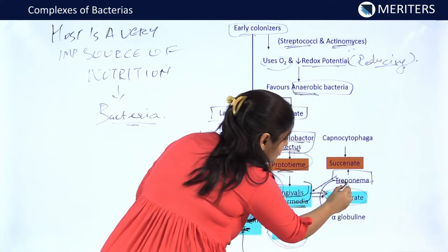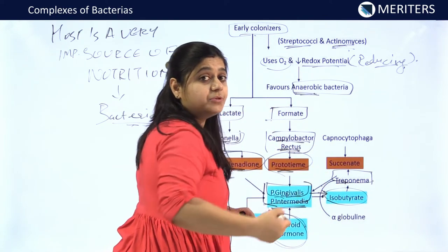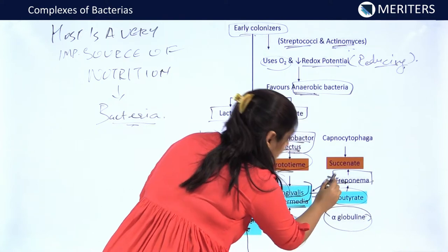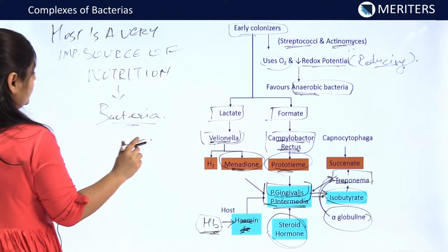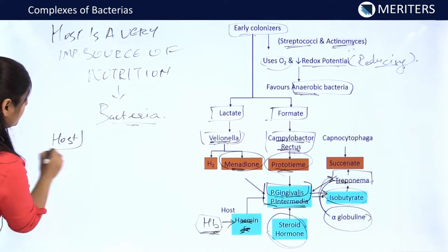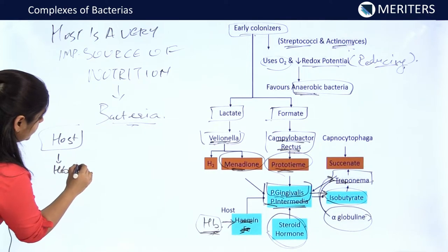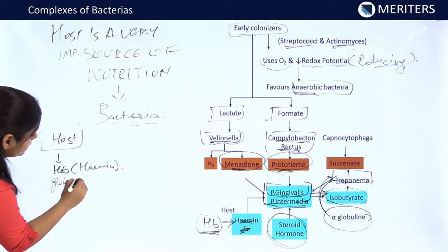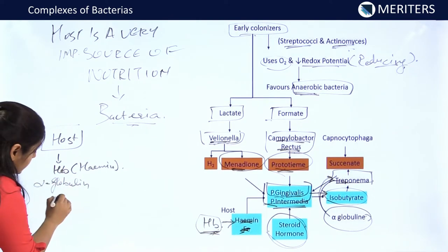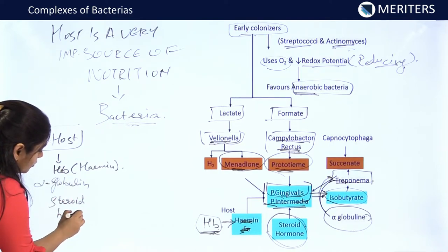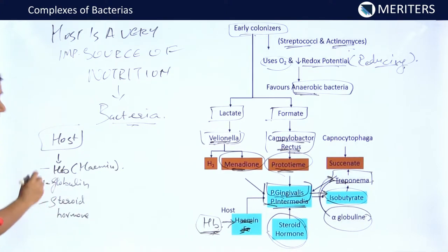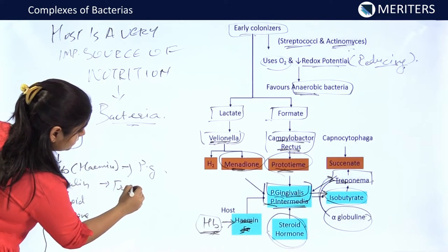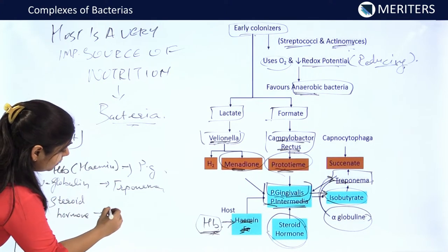Isobutyrate provides nourishment to Treponema. Also, Treponema gets its nourishment from the host through alpha globulin. Thus, three important host proteins provide nourishment to the bacteria: heme or hemoglobin provides nourishment to P. gingivalis; alpha globulin provides nourishment to Treponema; and steroid hormone provides nourishment to Prevotella intermedia.